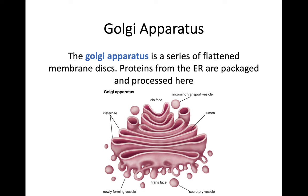Moving on to the next organelle, we've got the Golgi apparatus — or Golgi, you might hear both, it doesn't really matter. The Golgi apparatus itself is just a series of flattened disks. What's going to happen is proteins that are being made are going to be packaged and processed within this Golgi apparatus. They're going to move between these disks and then they're going to be released to other areas.